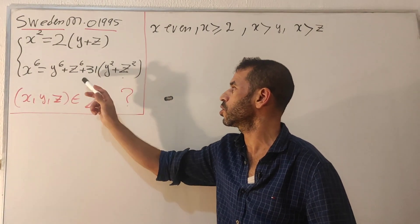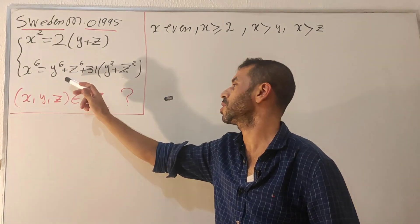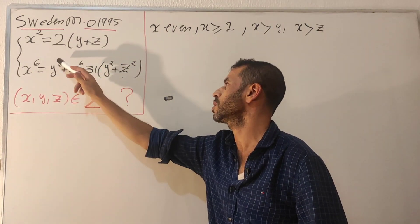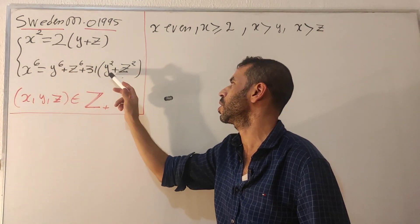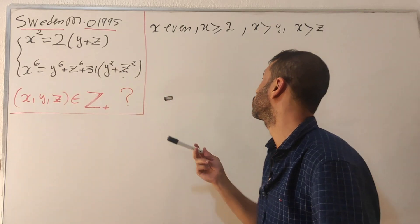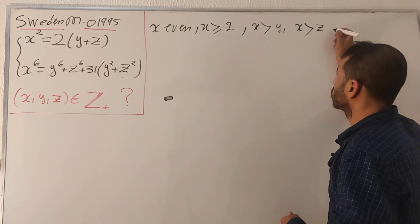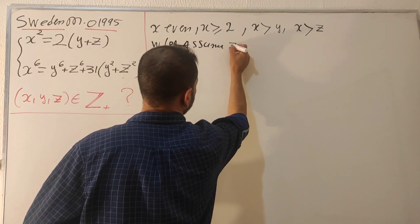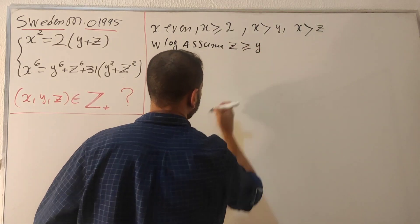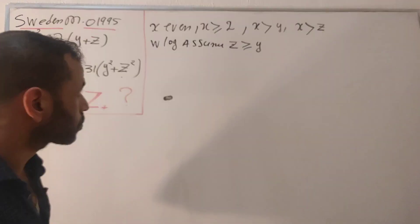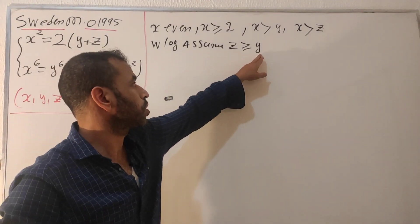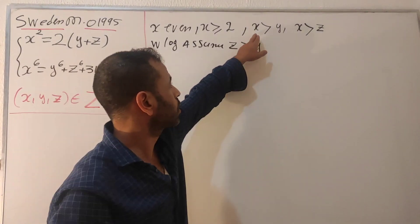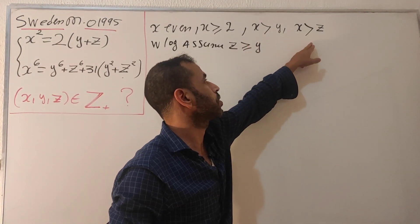Also, notice there is a nice symmetry between y and z in the second equation — y to the 6, z to the 6, y squared, z squared all appear symmetrically. Without loss of generality, let's assume z is greater than or equal to y. So z can be strictly greater than y, or z equals y.